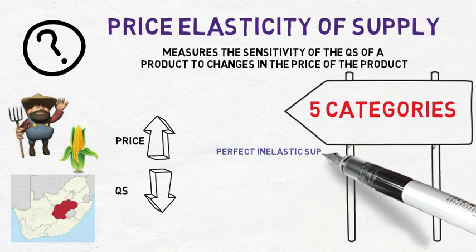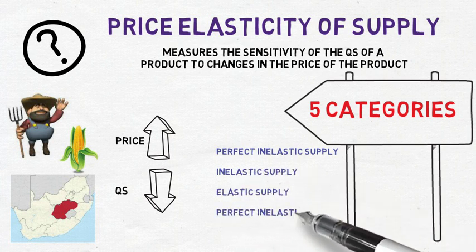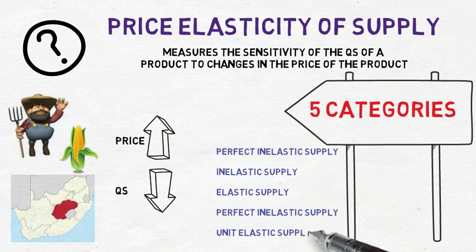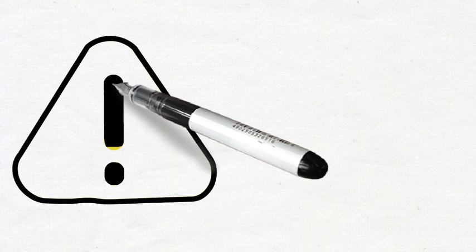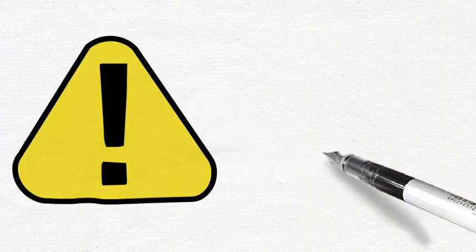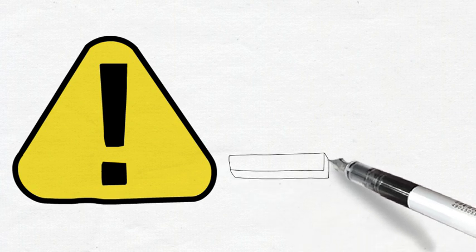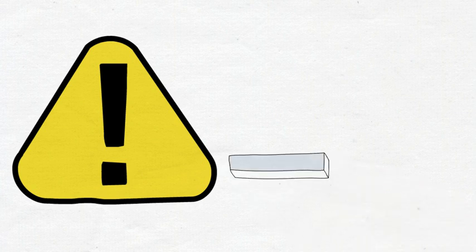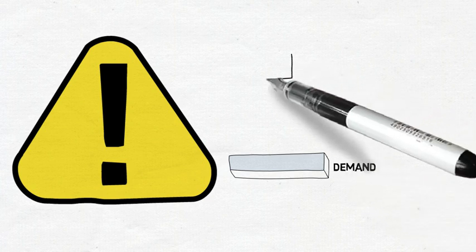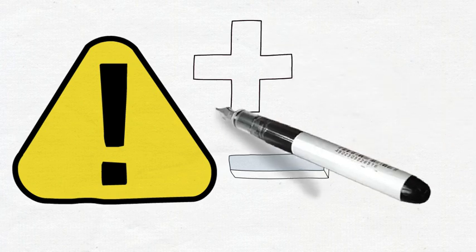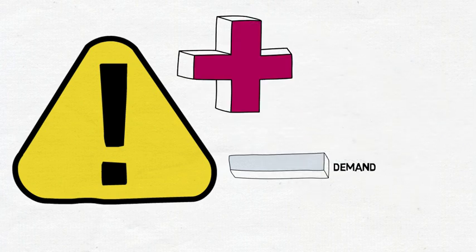The only difference is that we now work with supply curves and not demand curves. The five categories are: perfect inelastic supply, inelastic supply, elastic supply, perfect elastic supply, and unitary elastic supply. It is furthermore extremely important to distinguish between price elasticity of demand and price elasticity of supply. Remember, demand has a negative slope, so if your answer is negative, you are working with price elasticity of demand. Supply has a positive slope, so if you obtain a positive answer, you are usually working with price elasticity of supply.